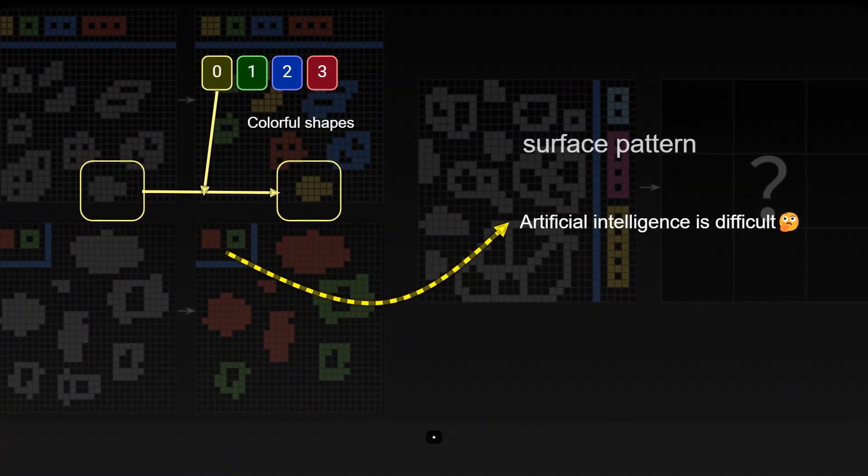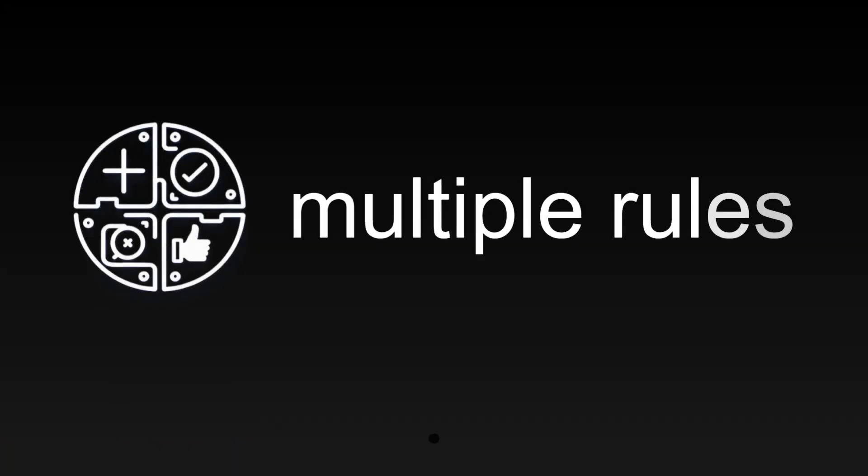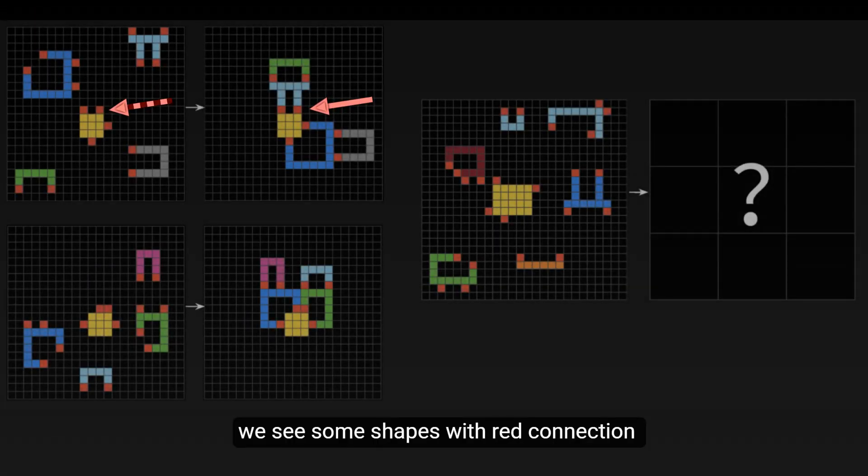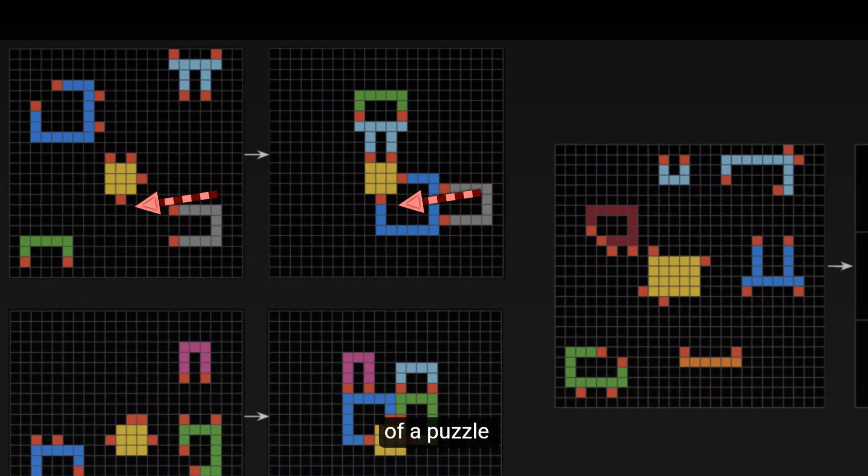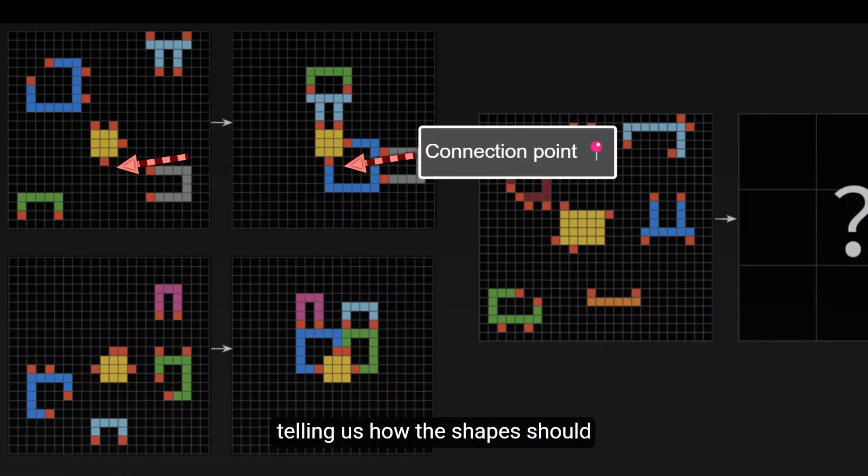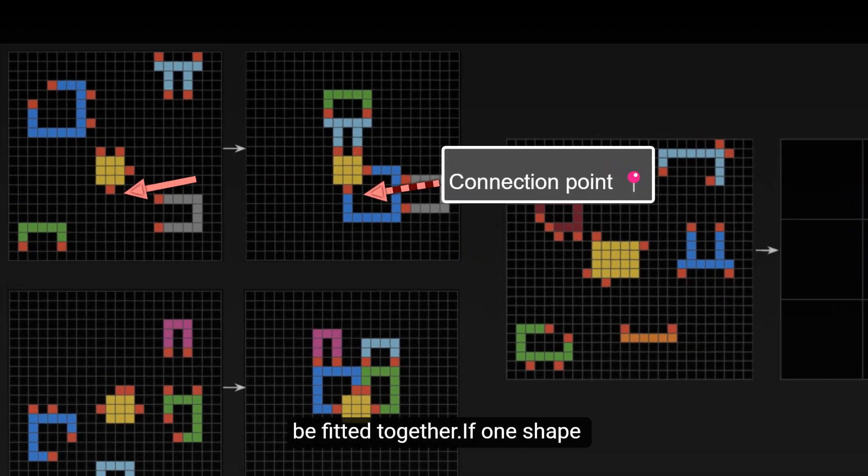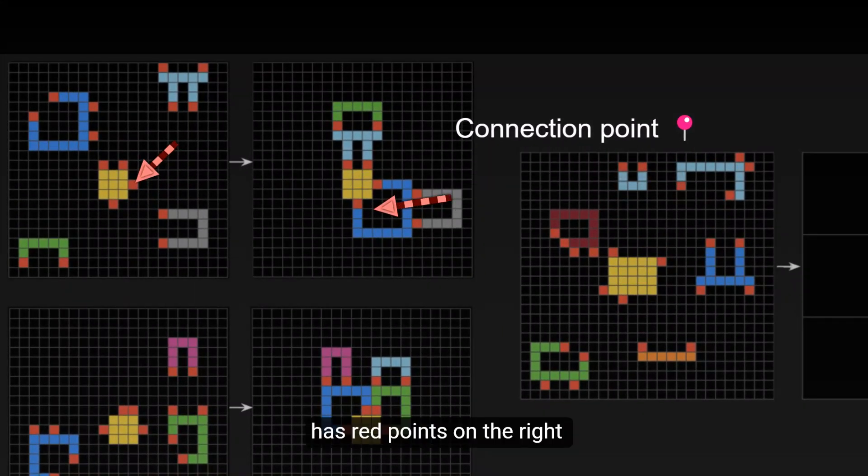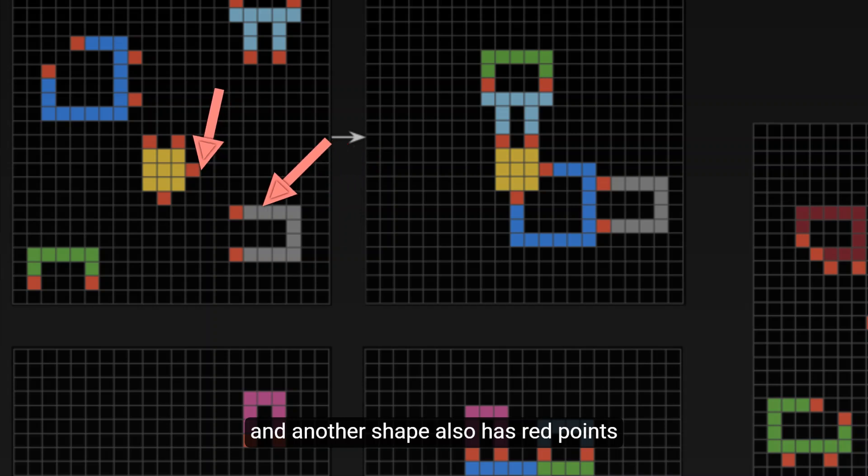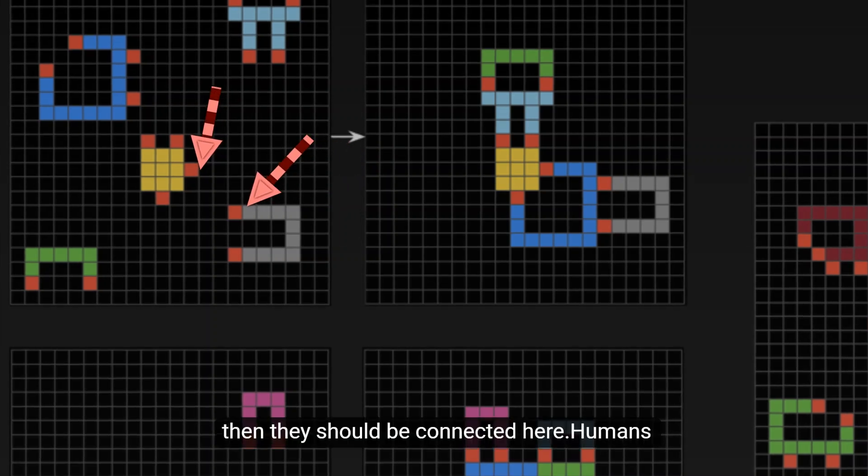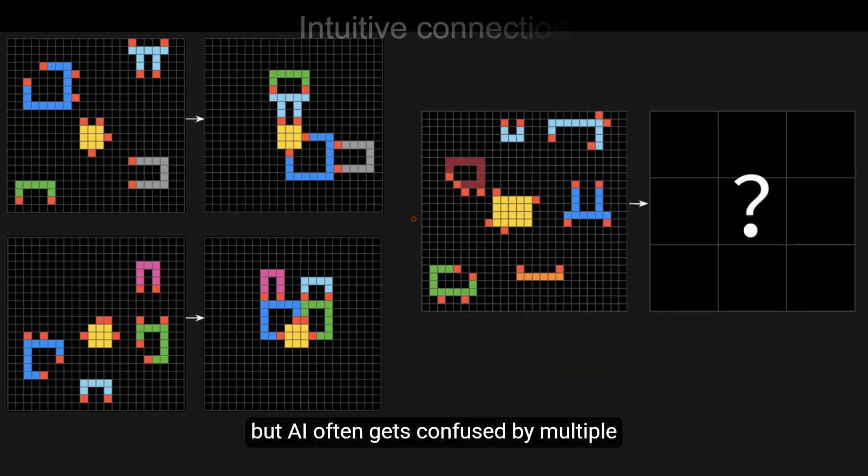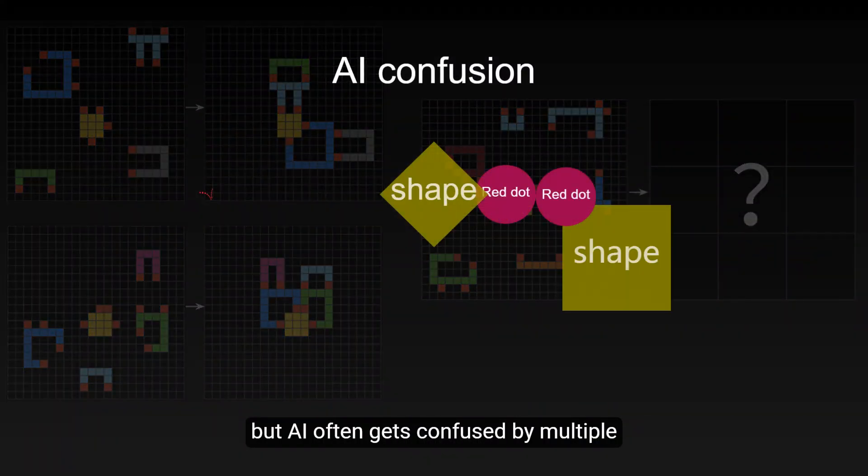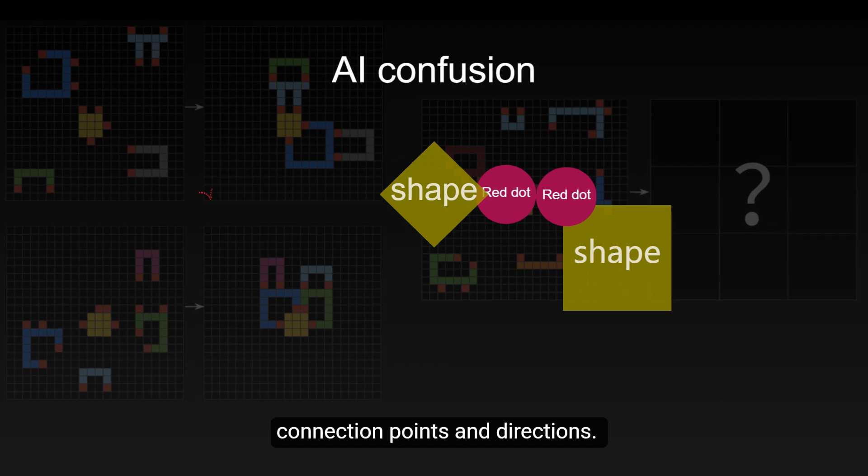Second is the ability to handle multiple rules. In another task, we see some shapes with red connection points. These connection points are like the bumps and dents of a puzzle telling us how the shapes should be fitted together. If one shape has red points on the right and another shape also has red points on the left, then they should be connected here. Humans can quickly understand this way of fitting, but AI often gets confused by multiple connection points and directions.